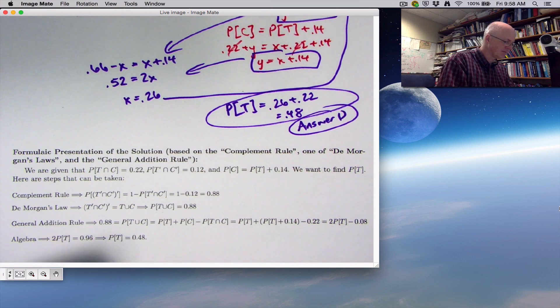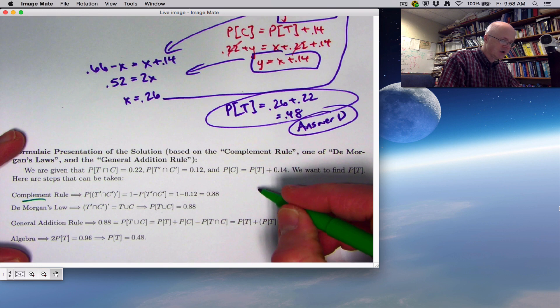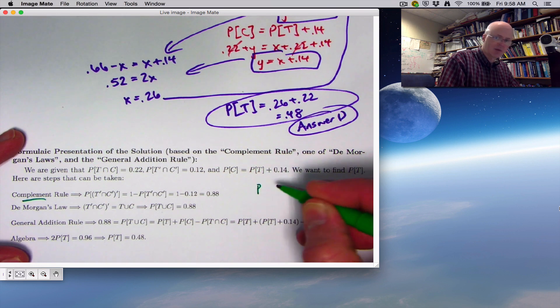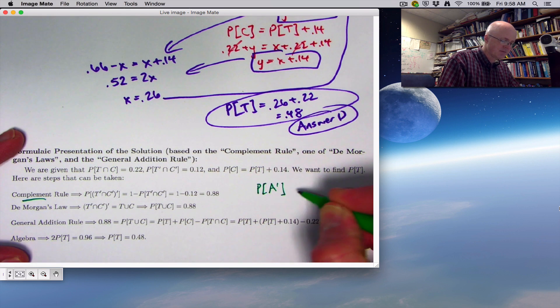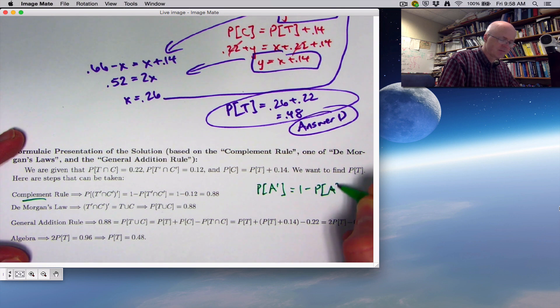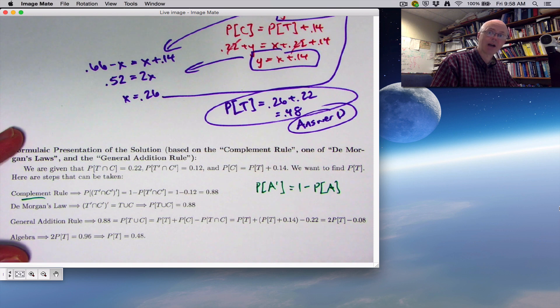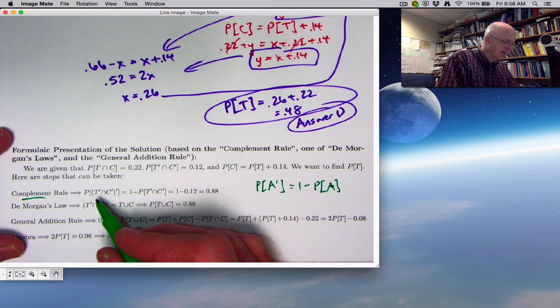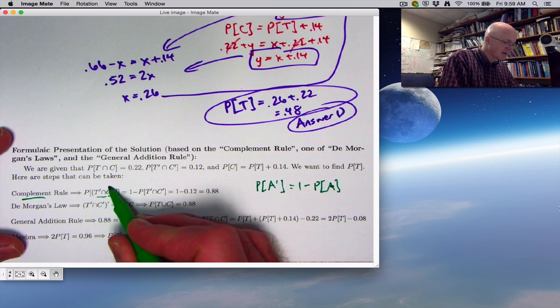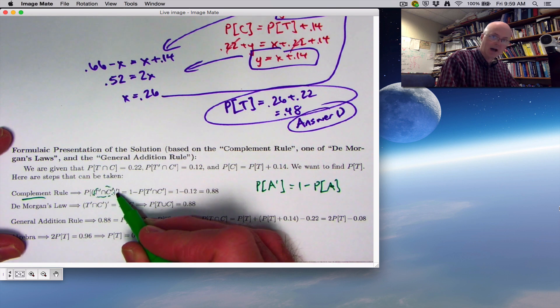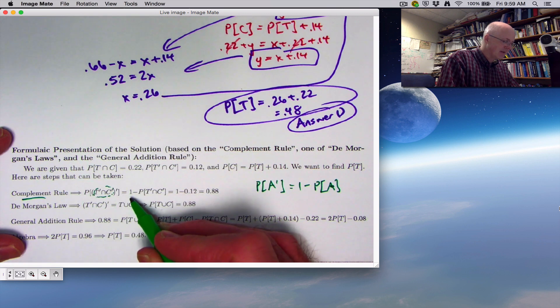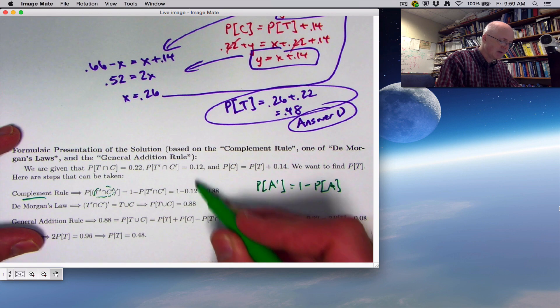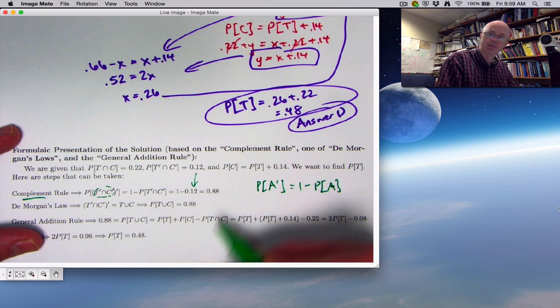Using these formal rules, we have the complement rule, which in general says the probability of the complement of an event is 1 minus the probability of that event. The probability of an event and its complement have to add to 1. This thing right here is representing A. I'm taking its complement, and the answer is 1 minus the probability of that thing, which is 0.12, so this is 0.88.